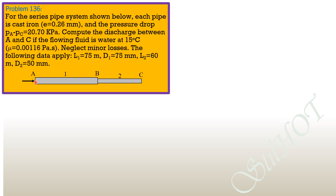The discharge flowing in pipe 1 equals the discharge flowing in pipe 2 because the pipes are in series. Given the absolute roughness, we can estimate the friction factor using the Moody diagram, assuming turbulent flow since the flowing liquid is water. The solution involves assuming a Reynolds number, then refining it using the Colebrook equation.